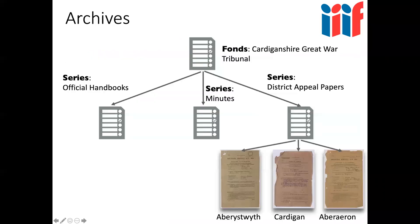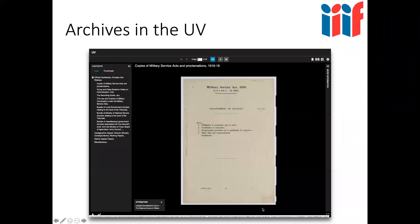A more complicated example is an archive, which can have many levels of hierarchy — in this particular example about seven levels. Everything above the item level which you'd request or view in a reading room is a manifest, and everything higher are collections. You can have collections at any level. In the Universal Viewer you can see the hierarchy highlighted, and as you navigate down to a level which is a manifest, you'll start to see the images.